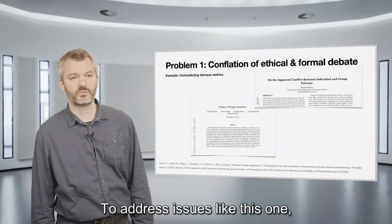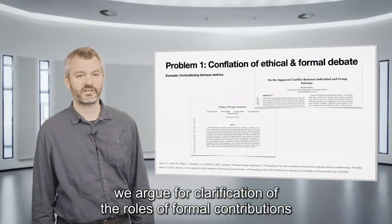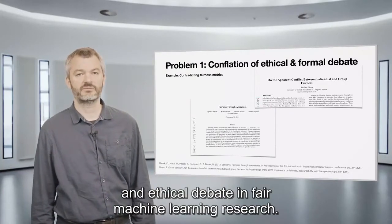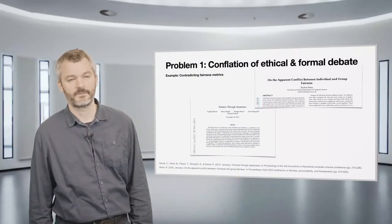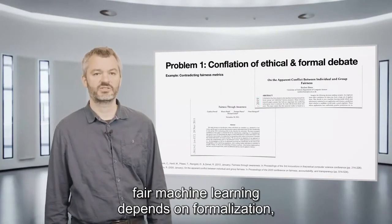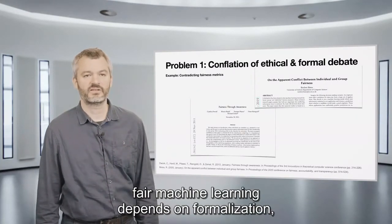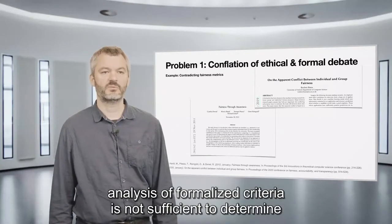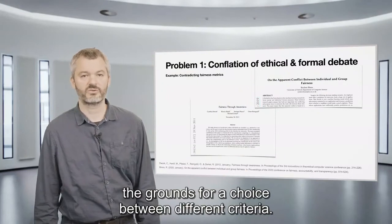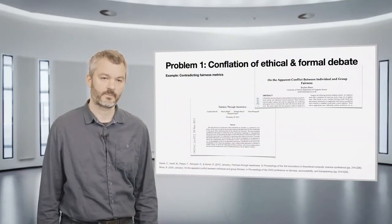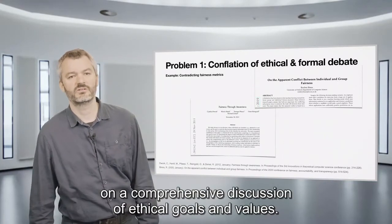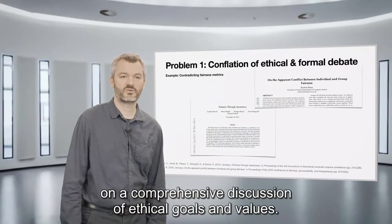To address issues like this one, we argue for a clarification of the roles of formal contributions and ethical debate in fair machine learning research. We can conclude from this interpretation that while fair machine learning depends on formalizations, analysis of formalized criteria is not sufficient to determine the grounds for a choice between different criteria. Fair machine learning thus also depends on a comprehensive discussion of ethical goals and values.